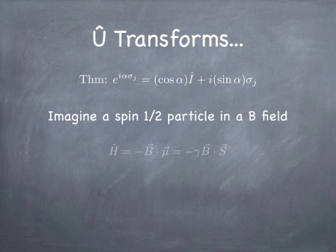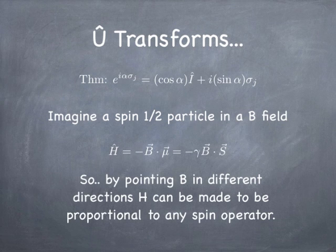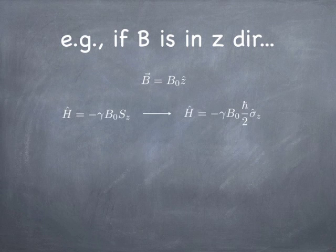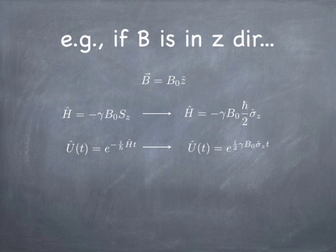Let's see how this works. Imagine we have a spin-1/2 particle in a magnetic field. The Hamiltonian is going to be minus B dot mu, but mu is gamma times S, the spin of the particle. If we put that Hamiltonian in and create a time evolution operator, it's going to be e to the i gamma B_0 over two times sigma_z if the magnetic field is pointing in the z direction. If you had it in the x direction, you'd get sigma_x; if in the y direction, you'd get sigma_y.